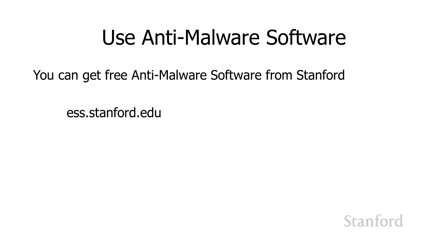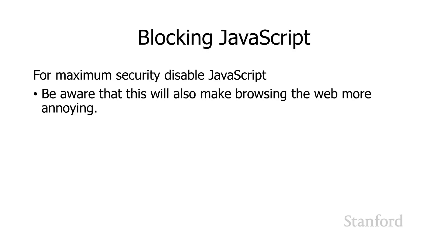Use anti-malware software. Operating systems have gotten a bit better with having good anti-malware software built in — Windows Defender is actually considered pretty decent. You can also get free anti-malware software from Stanford at ess.stanford.edu, which is short for Essential Stanford Software. For maximum security, you can consider blocking JavaScript. This will make browsing the web a bit more annoying, but it will enhance your security.